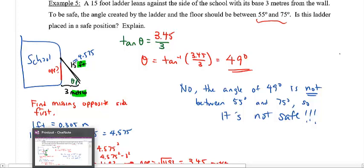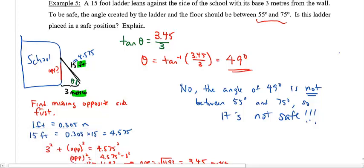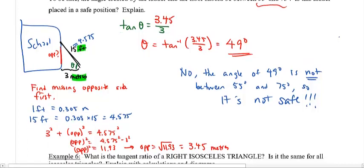So here we've used tangent ratios to help us solve a real-life problem. I don't want to hurt myself, so doing this math tells us — wait — the ladder in this position is not safe.